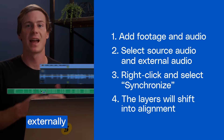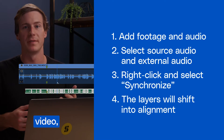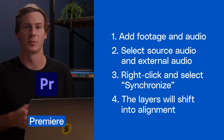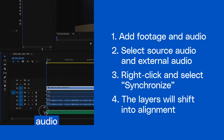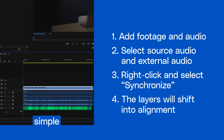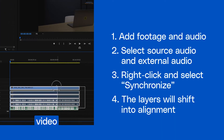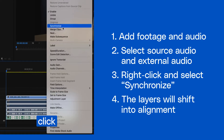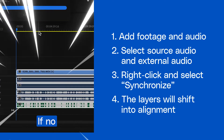Here are two ways to sync externally recorded audio with video using Premiere Pro. If you record scratch audio to your video track, the most simple way is to select both the source video track and external audio, right-click, and select Synchronize.